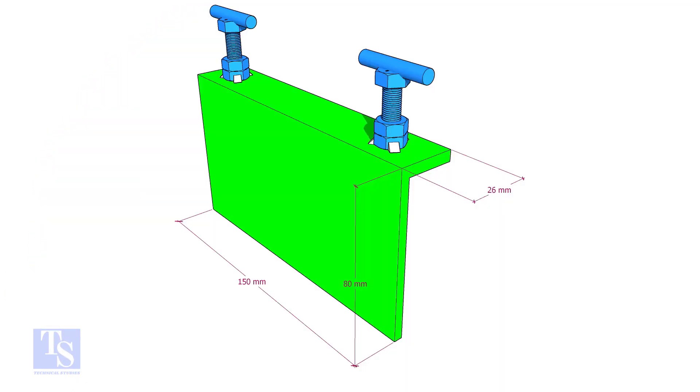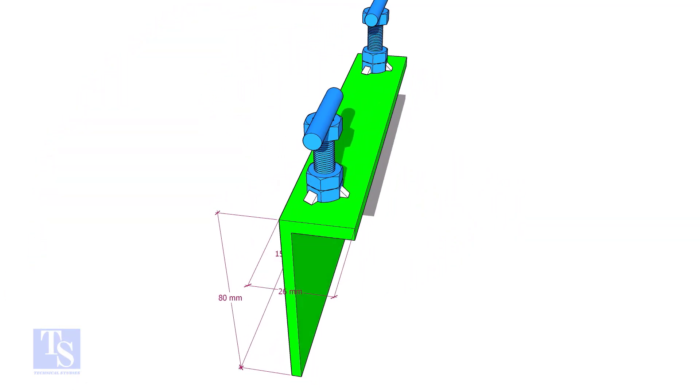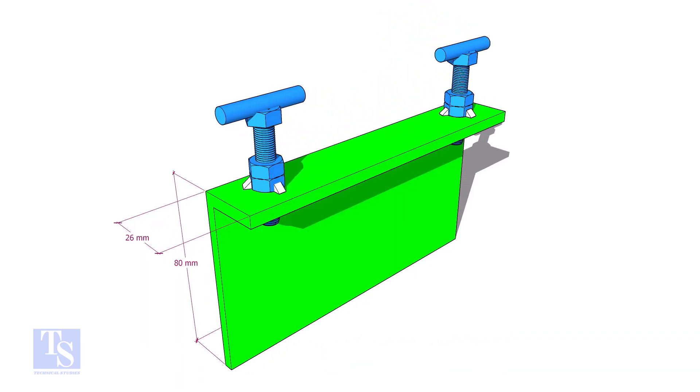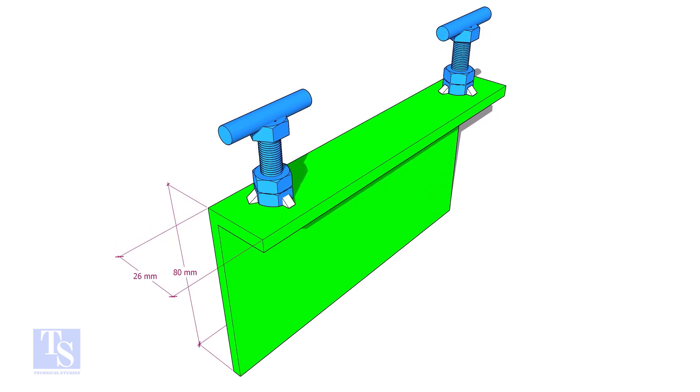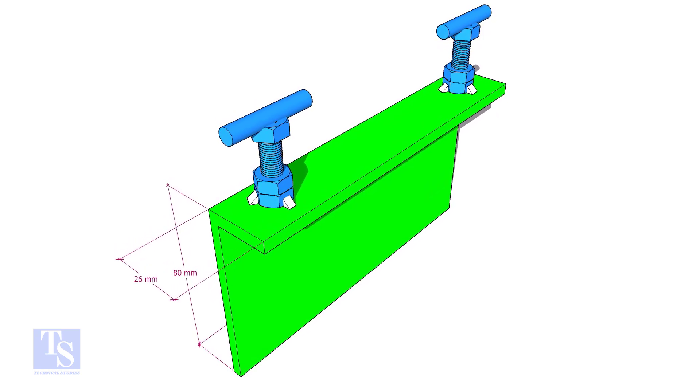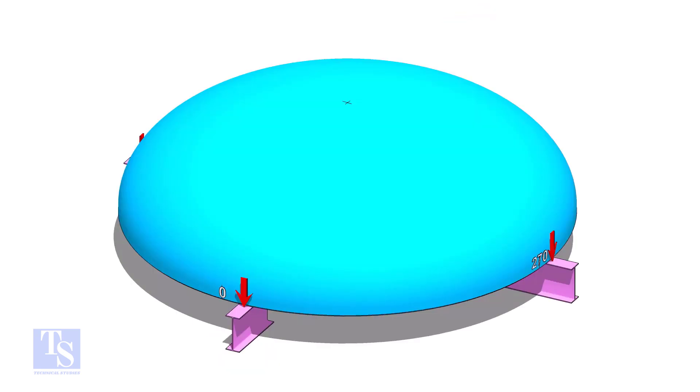Before starting the marking, make a clamp as shown. Now, level the four quarters of the dish end.